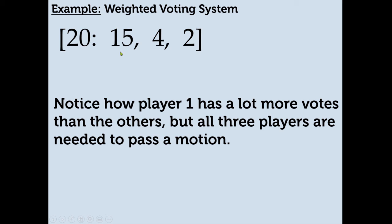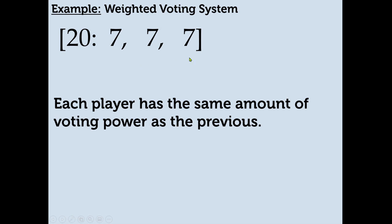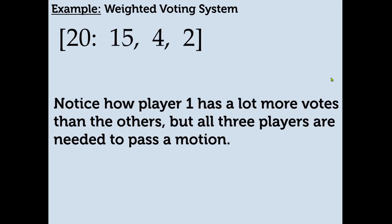Player 1 by himself does not have enough votes to meet quota. Even if Player 1 and Player 2 combine their votes, they still don't have enough — 15 plus 4 gives 19, which is not enough. So you need all three players to vote the same way to meet quota. In essence, even though Player 1 has a lot more votes than Player 3, they have the same power because all three players have to vote the same way to pass a motion. A voting system like this is the same as if all three players had the same number of votes — they have the same amount of power.